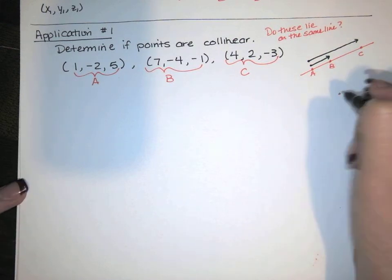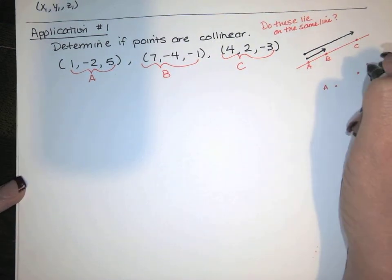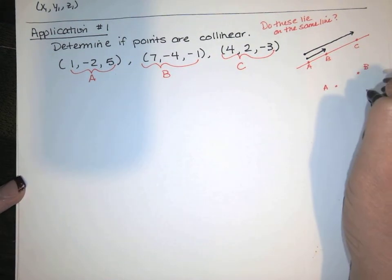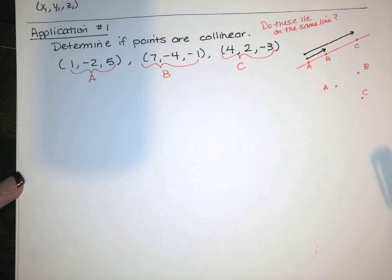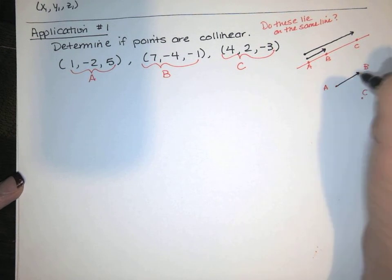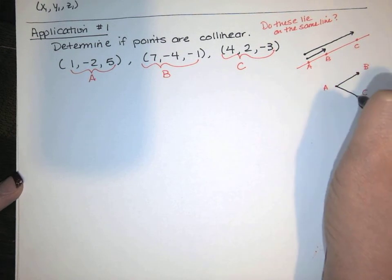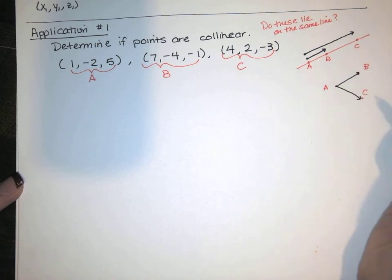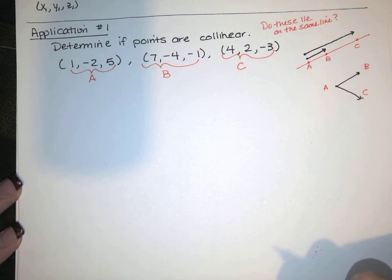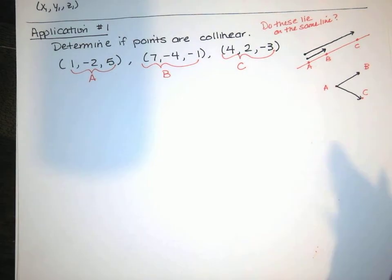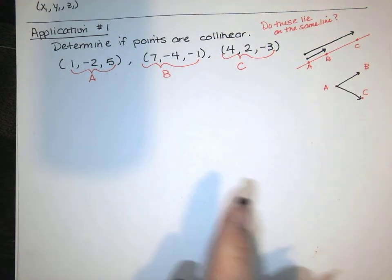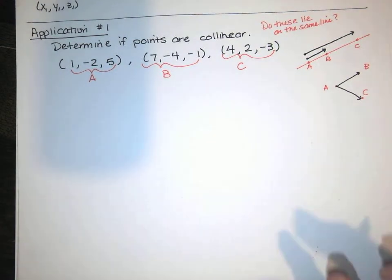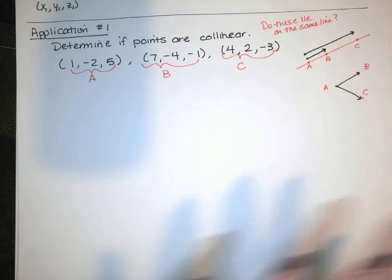Let's say they're not on the same line. So here's A, here's B, and here's C — but then the vector from A to B and the vector from A to C are obviously not multiples of each other. Now I've drawn it in 2D, but this could be in 3D.